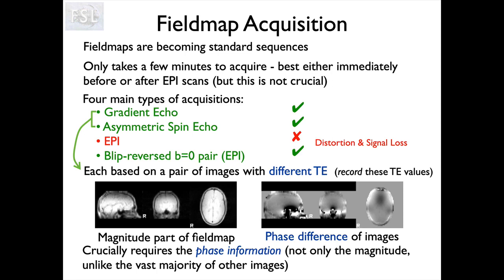As part of the field map images, we often see a magnitude image that looks like a normal brain image but lower quality. We're also interested in the phase component — every MRI image has a phase component but we normally discard it. For field maps we don't, because it contains all the interesting information. The phase difference creates something proportional to the map of the field, which you can see is uniform for most of the brain except in the inferior frontal and temporal areas.